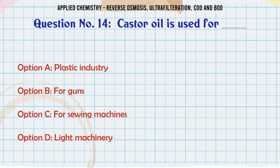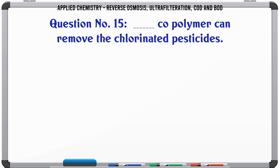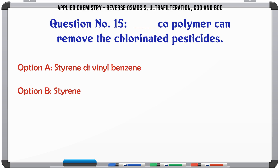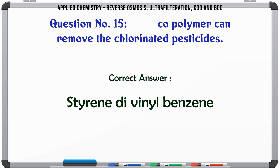The correct answer is plastic industry. Co-polymer can remove the chlorinated pesticides: a) styrene and vinyl benzene, b) styrene, c) benzoyl peroxide, d) phenol. The correct answer is styrene and vinyl benzene.